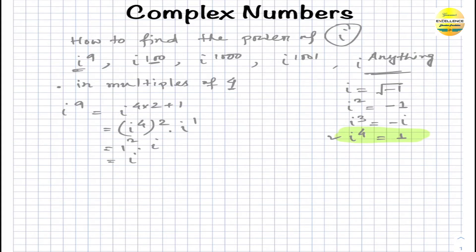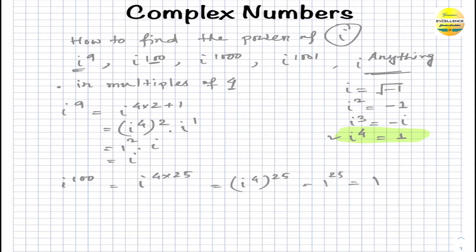i to the power one is i, so finally i to the power 9 equals i. Next, let's take the example of i to the power 100. One hundred can be written in multiples of four as 4 times 25. So i to the power four is one, and one to the power 25 is again one. Therefore i to the power 100 is one.